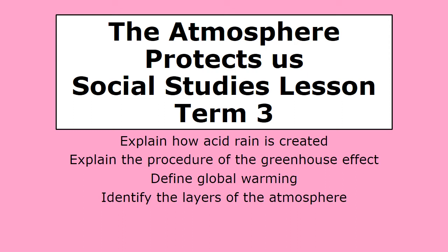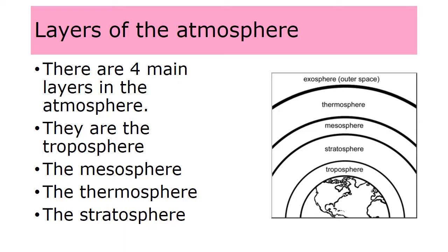The atmosphere protects us — social studies lesson, term 3. The learner will be able to: explain how acid rain is created, explain the procedure of the greenhouse effect, define global warming, and identify the layers of the atmosphere.